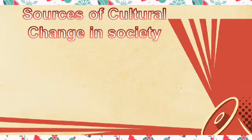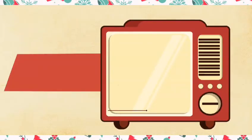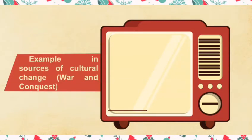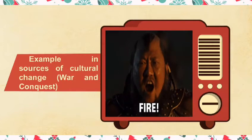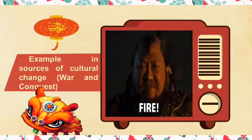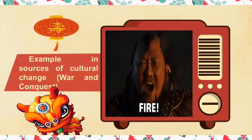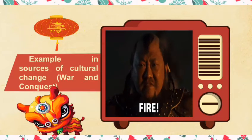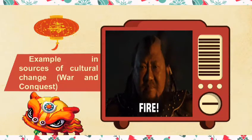Next is War and Conquest. When a state conquers another territory and its population, it influences their culture. For example, when the Mongol Empire subdued China under the leadership of Kublai Khan, establishing the power of the Mongols in China as the Yuan dynasty, Chinese culture became part of the identity of the Mongols who migrated to China after Kublai's successful invasion. Ideologically and culturally, Mongols tried to remain isolated and prevent assimilation of Chinese culture, but as time passed, the Mongols became increasingly Chinese-like.